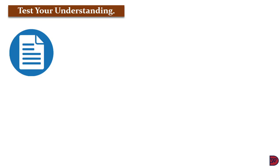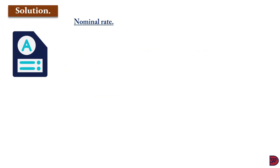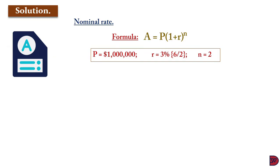Ian invests $1 million on 1st January 2020 at 6% compound interest semi-annually, meaning the compounding is done twice in a year. We need to find the total amount to his credit on 31st December 2020 using the nominal rate and the effective rate. Starting with the nominal rate of 6%, the formula is A equals P times (1 + r) raised to the power n. The principal is $1 million, the rate is 3% (6% divided by 2), and the number of compounding periods is 2.